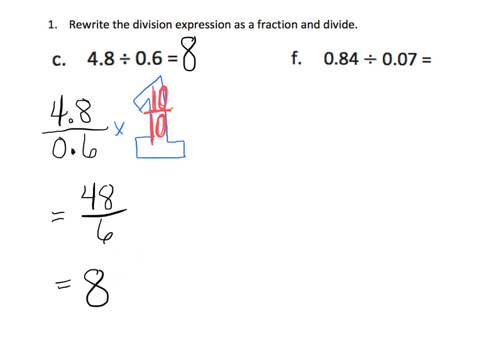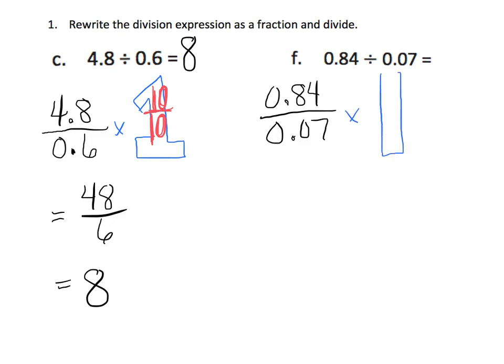Let's do this next one. We have 0.84 divided by 0.07. And once again, I'm going to multiply by 1, which means we're not going to change the value — we're just going to change the way it looks. But this time, I'm going to multiply by 100 over 100. There's my one whole. And when I multiply by 100 over 100, I end up with 84 over 7.